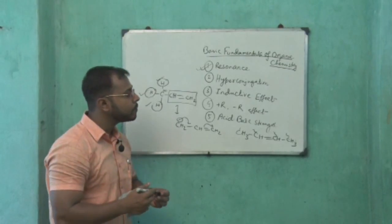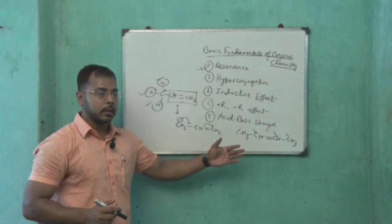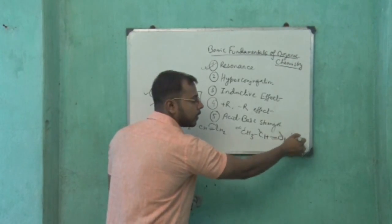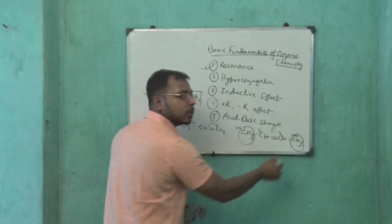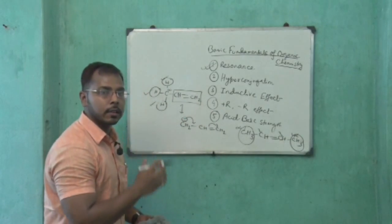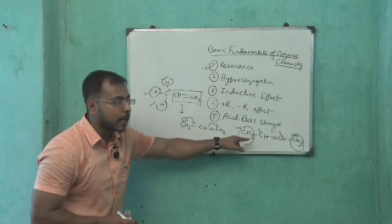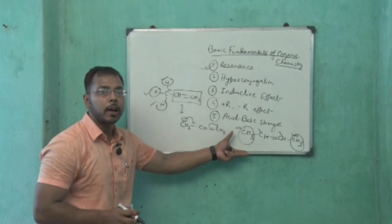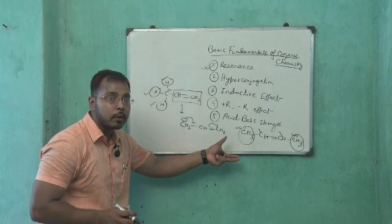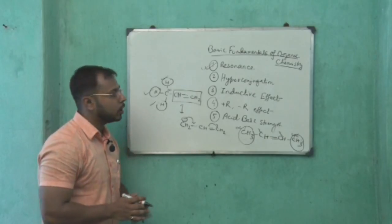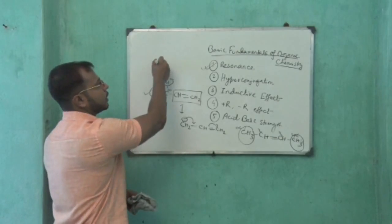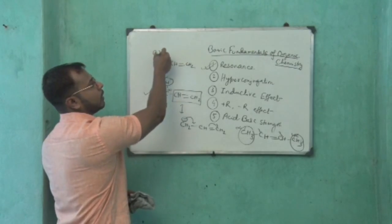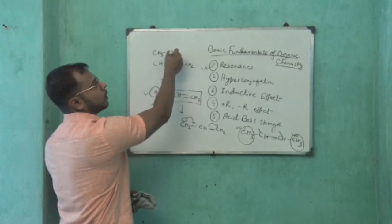For 2-butene, there are two alpha carbons — one on each side of the double bond. So how many alpha hydrogens are there? Six alpha hydrogens are present. Therefore, this alkene is much more stable than propene, because more alpha hydrogens means more hyperconjugation, which means more stability. So in your board or competitive exam, if propene and butene are compared, butene is more stable.